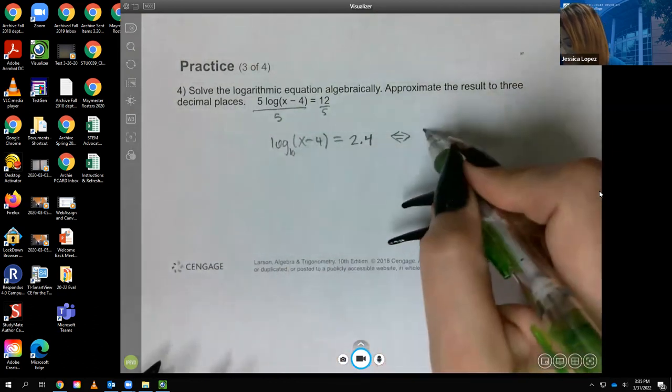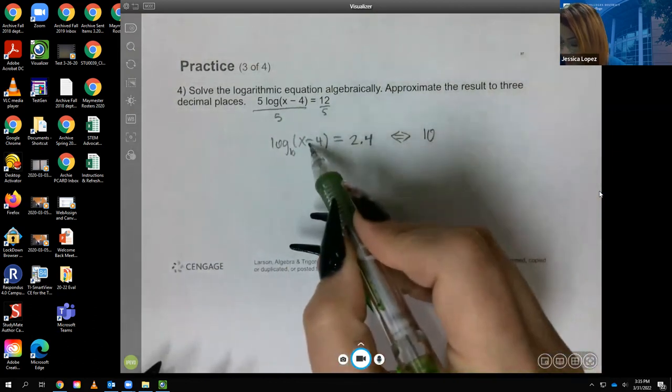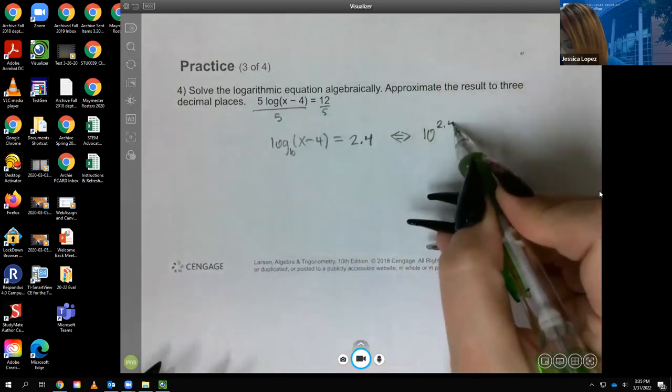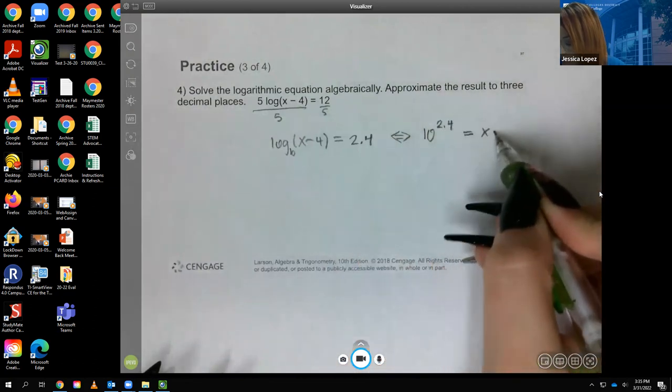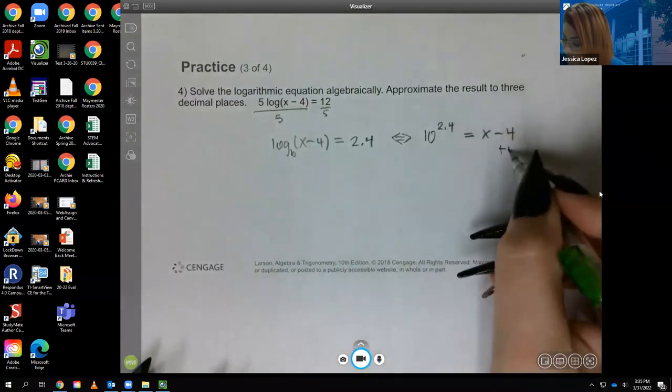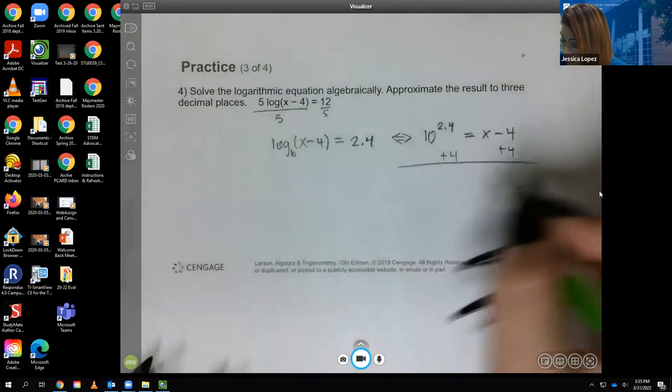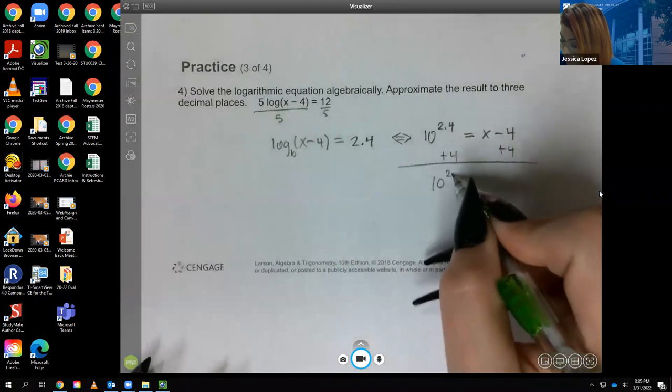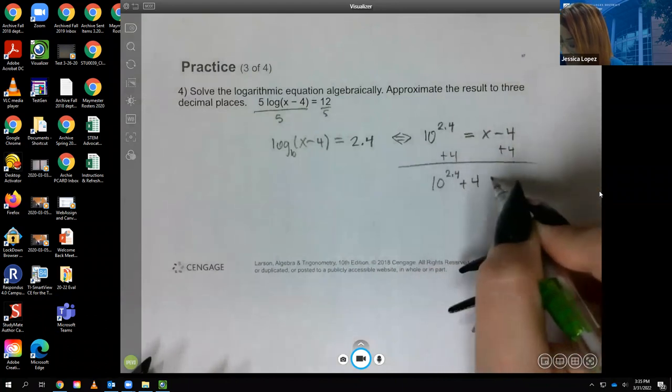So my base would be 10, and then not this number, but the other number will be attached to the 10. So then this gets kicked to the other side. And if I'm solving for x, all I have to do is add 4. So I get 10 to the power of 2.4 plus 4 equal to x.